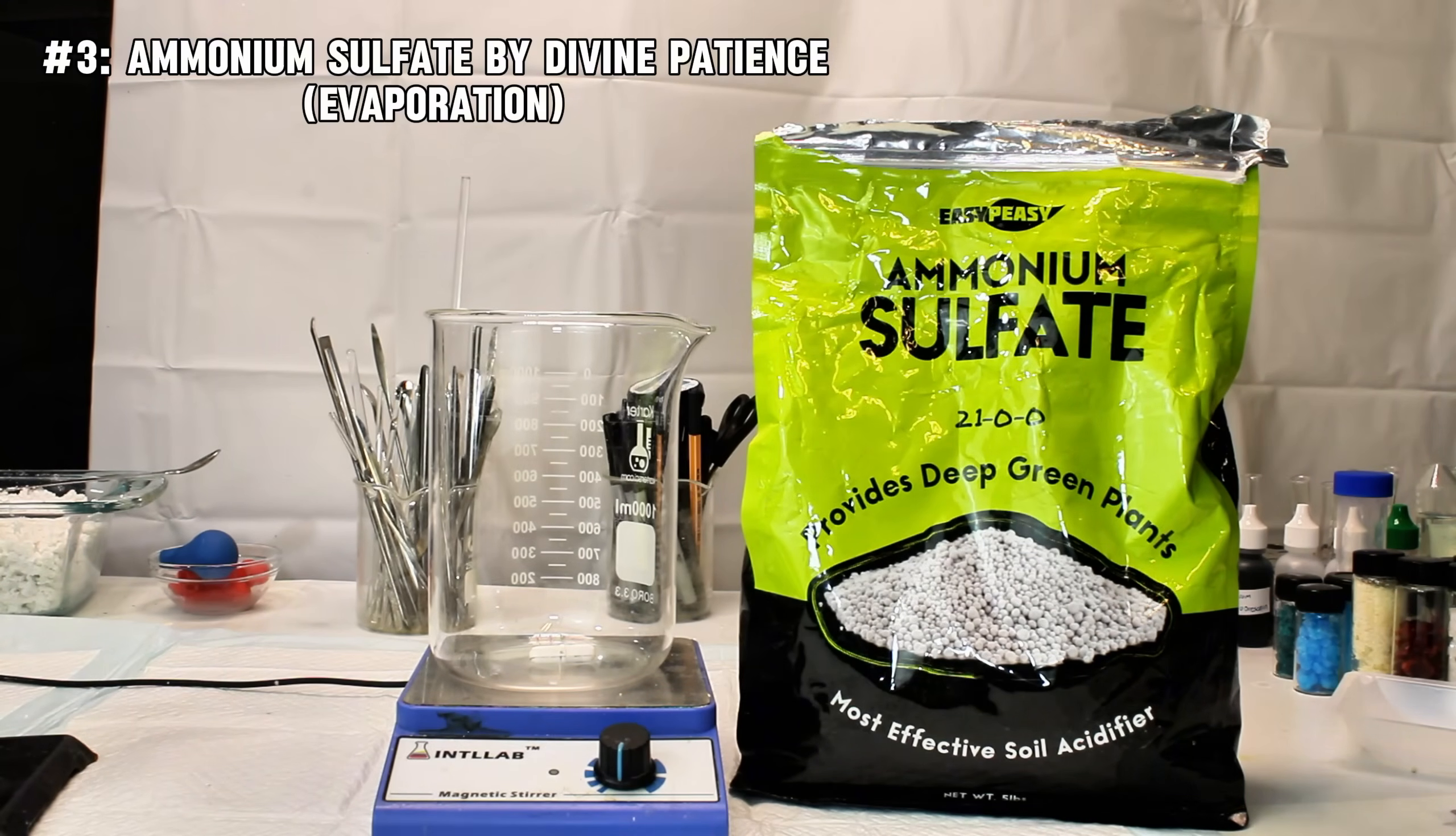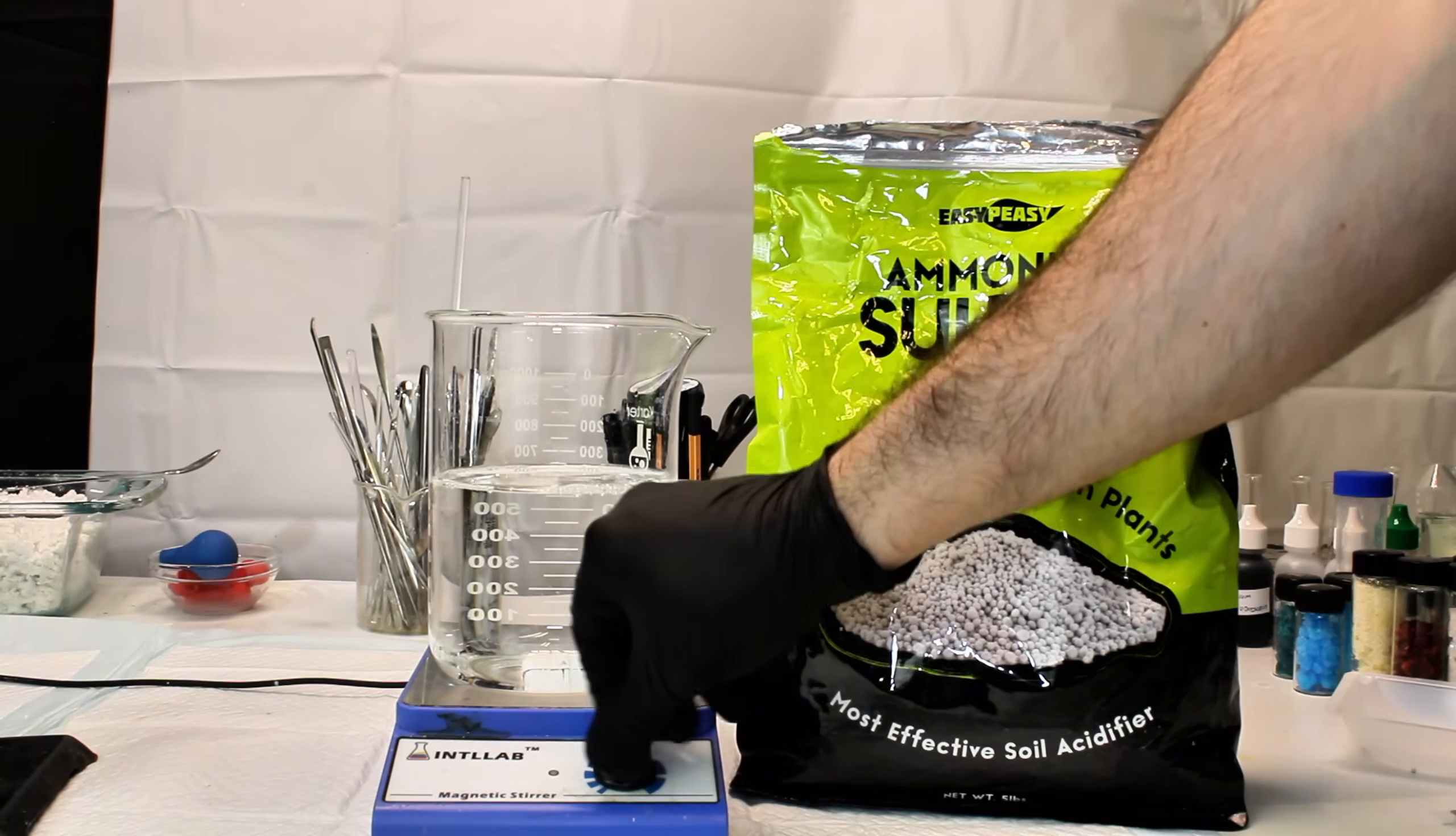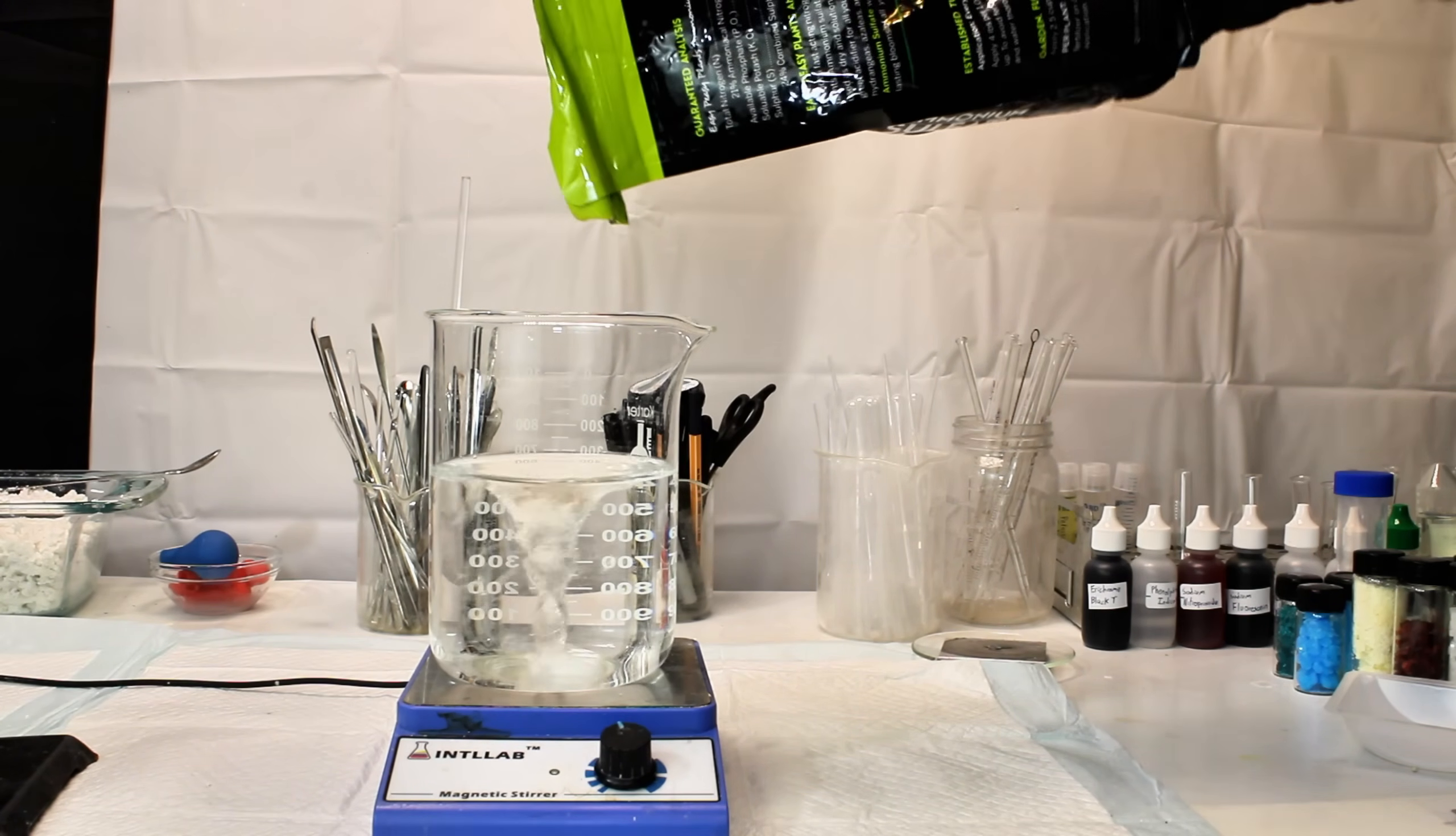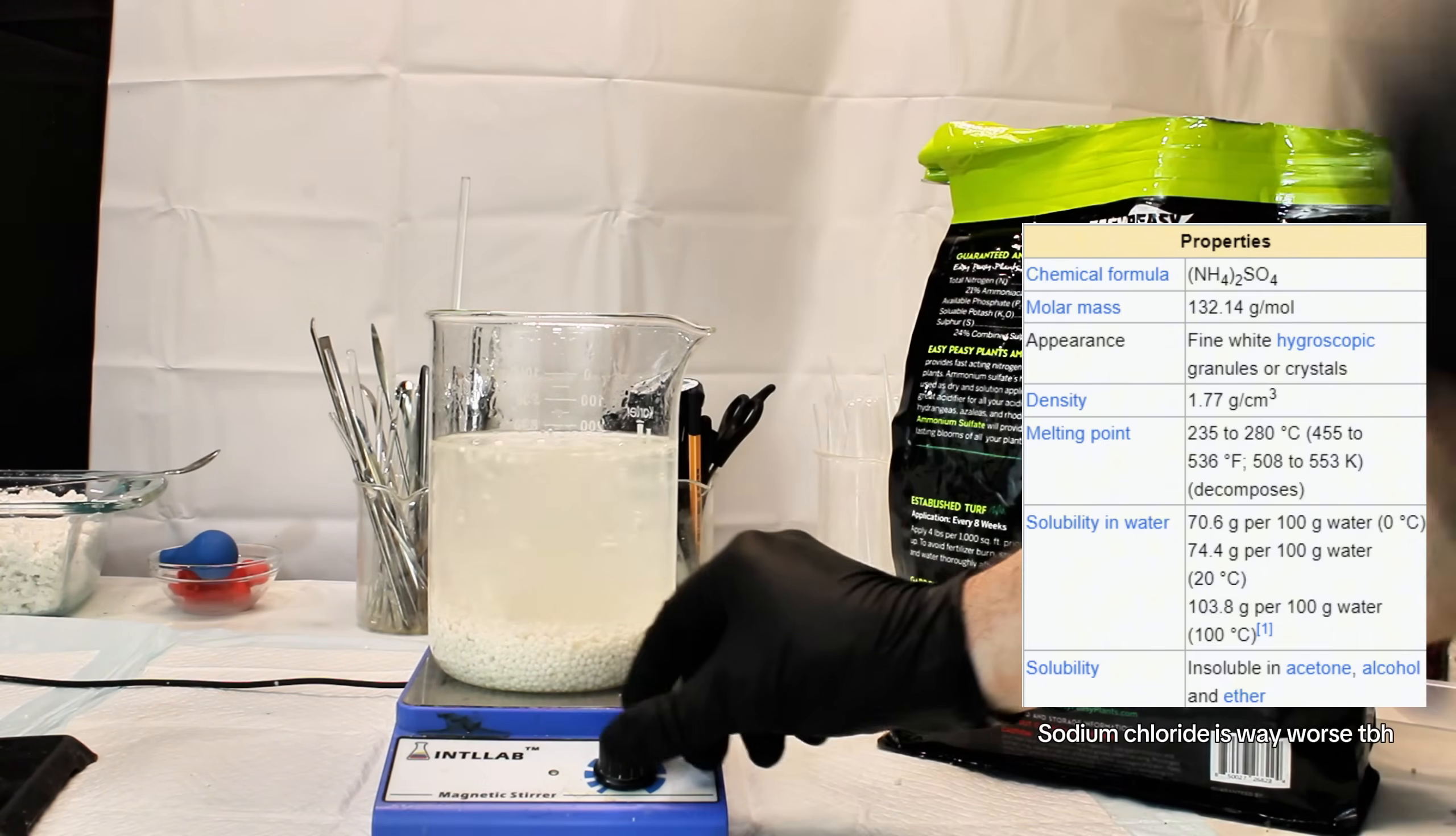For my third and final fertilizer cleanup, I decided to try ammonium sulfate, which was probably the least satisfying and most tedious of all, which is why I saved it for last. This is because unlike urea, ammonium sulfate has a very shallow solubility curve. This means that a similar mass of ammonium sulfate will dissolve at high temperatures and low temperatures.